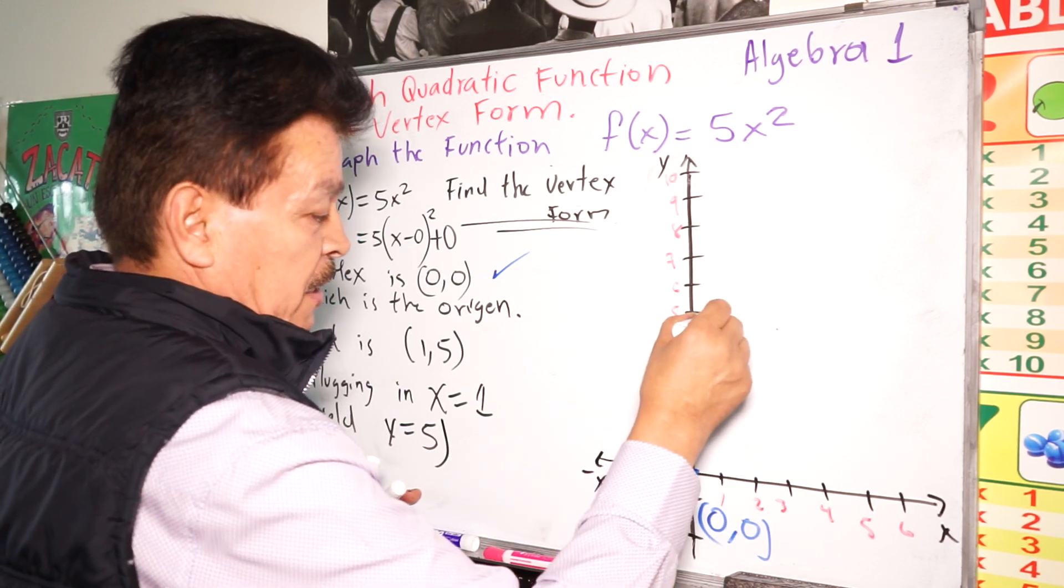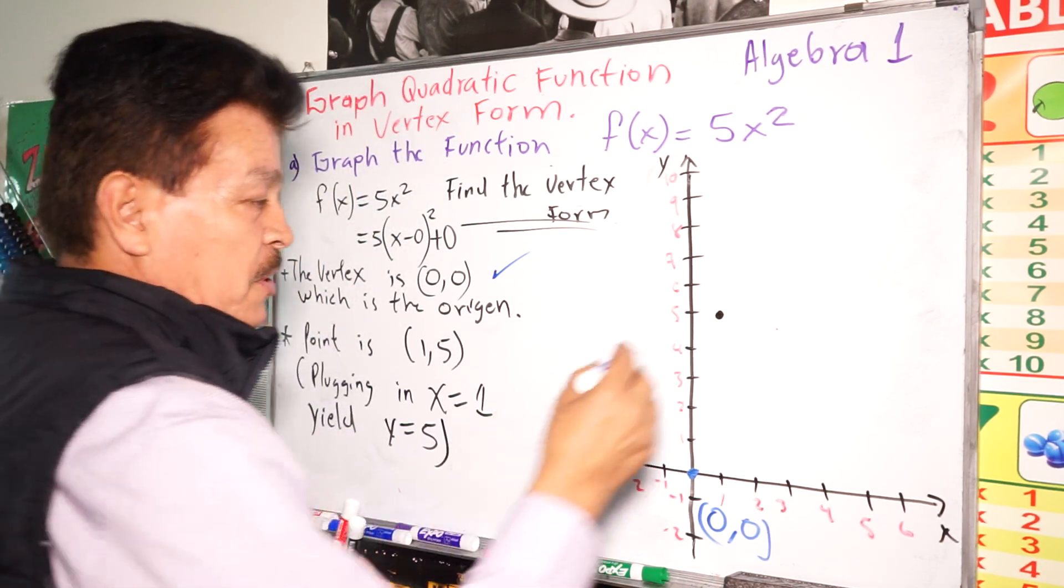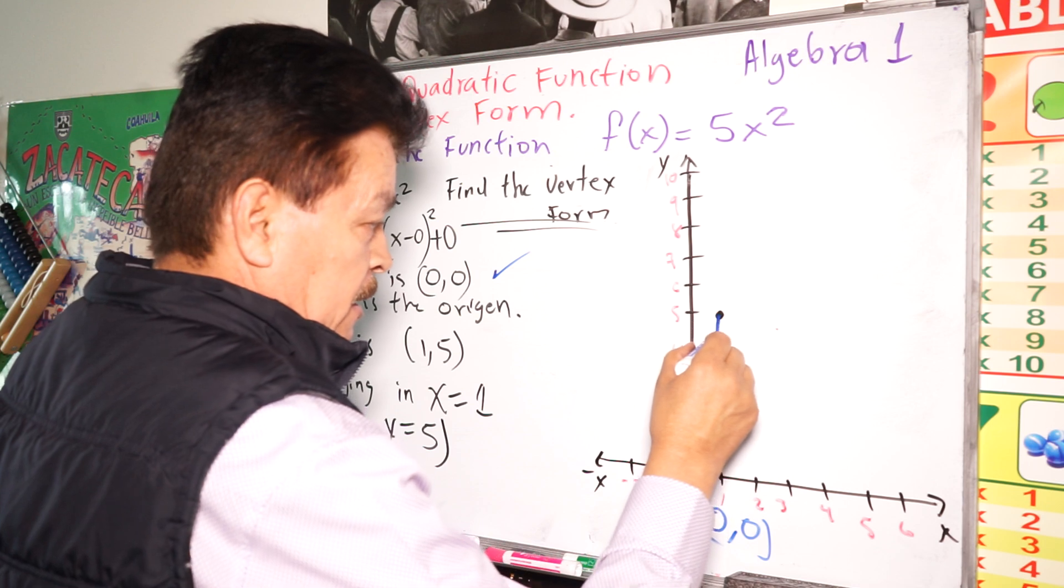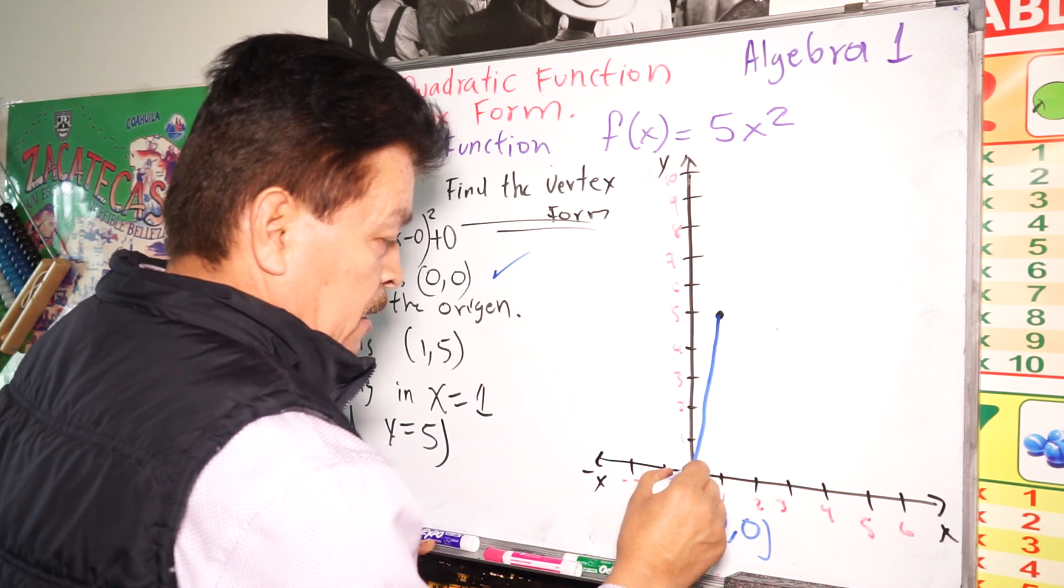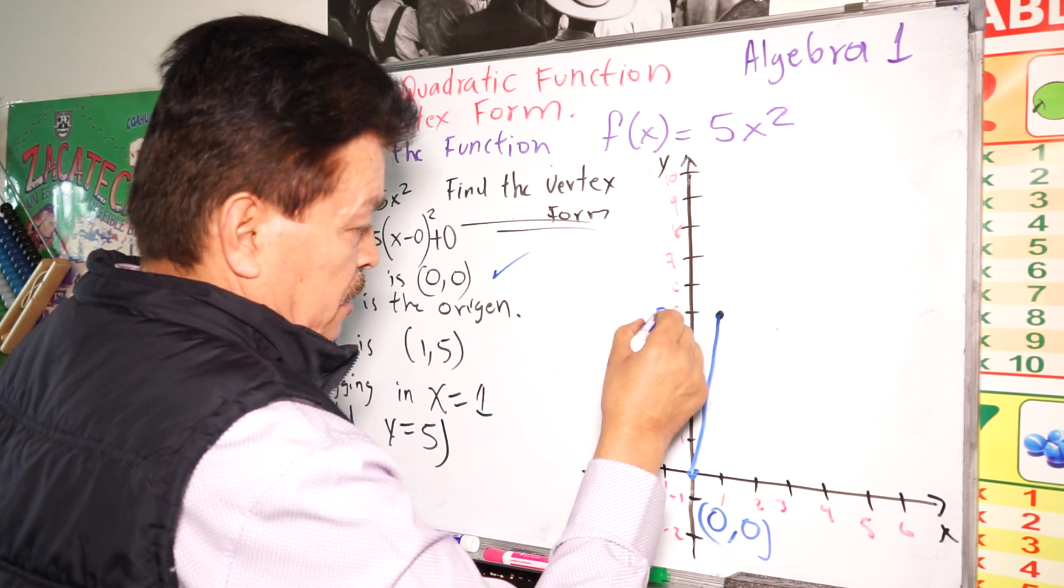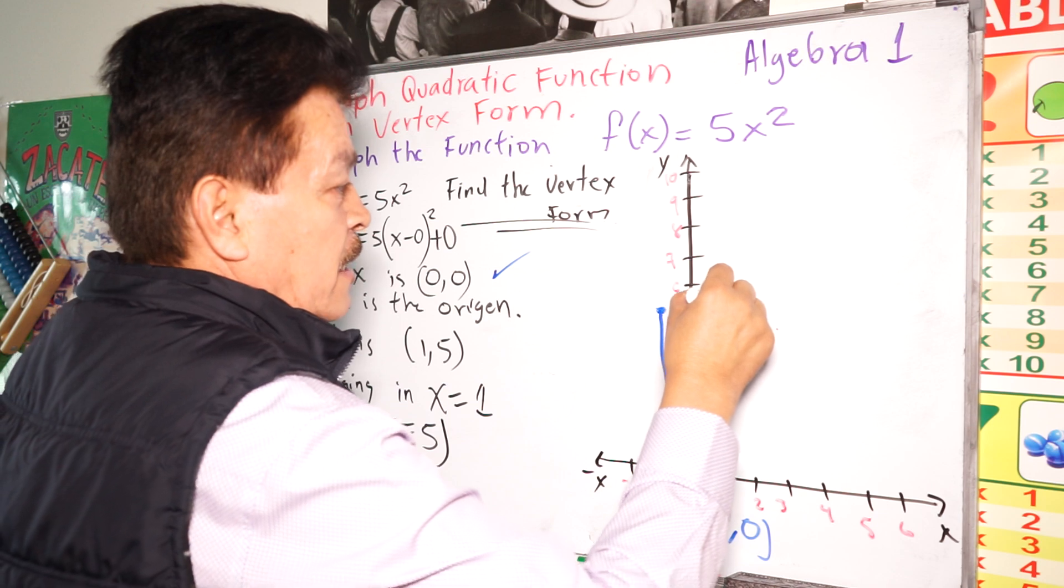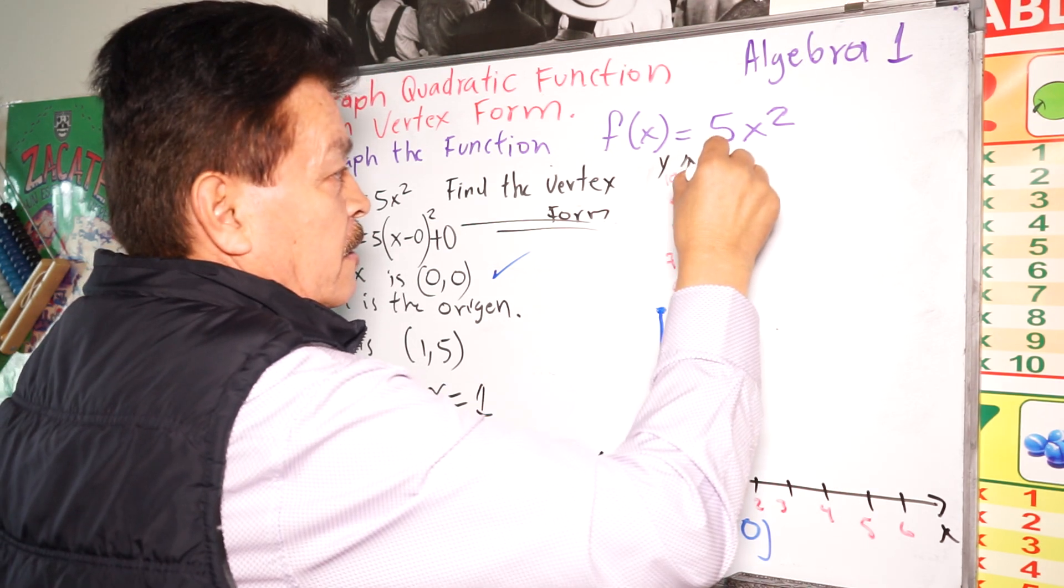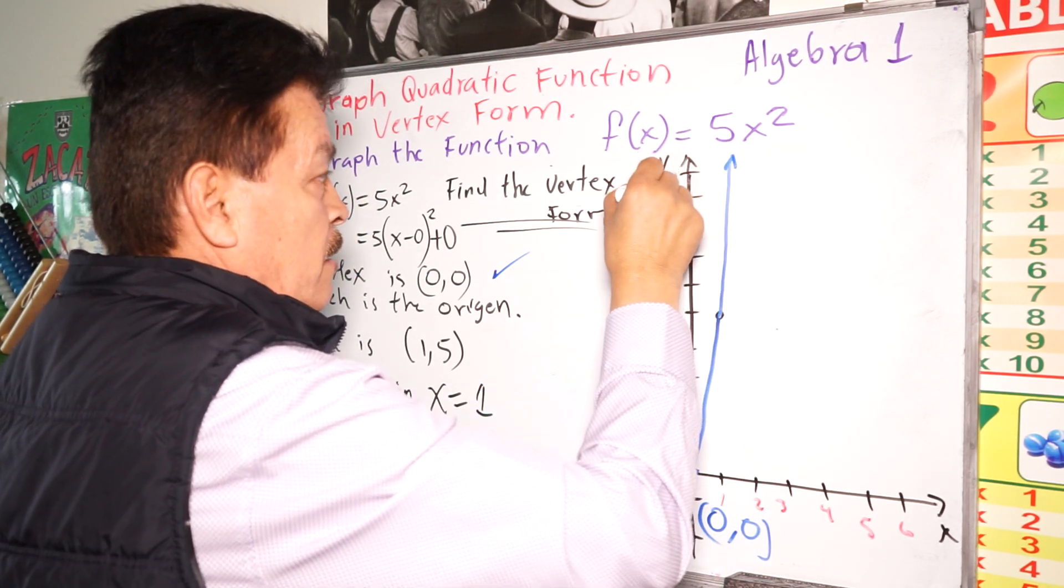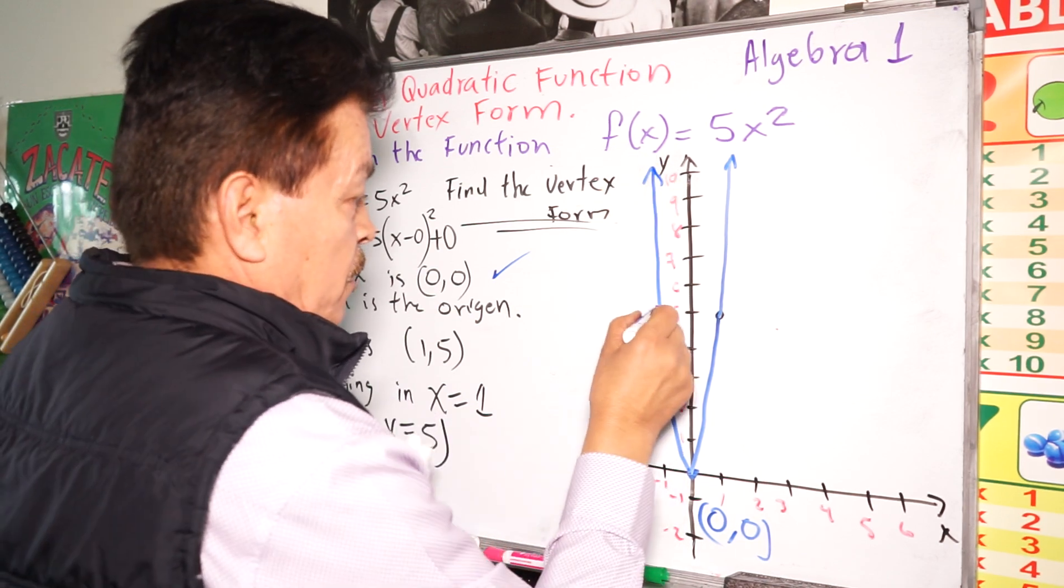So now we have a point on the parabola here. Since this is a quadratic, the other point is right here. So then the parabola runs in this way.